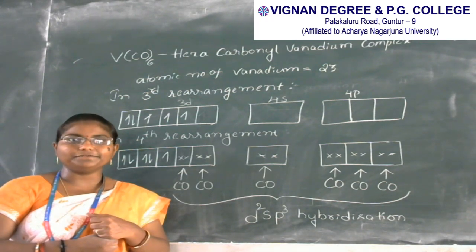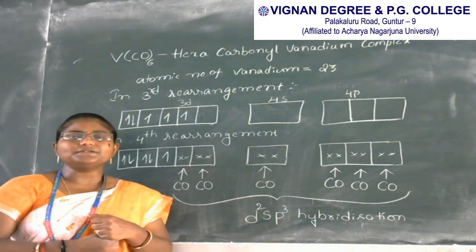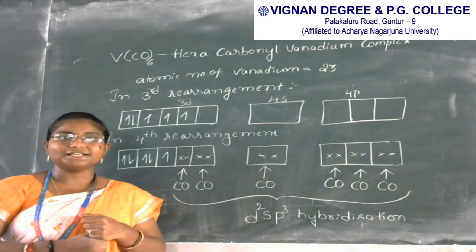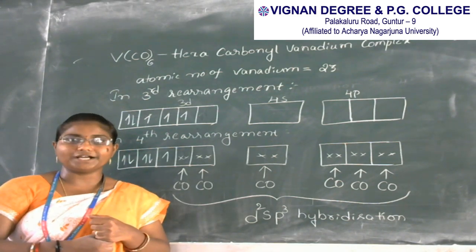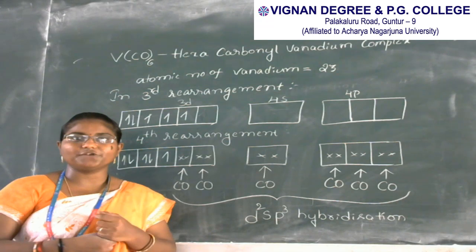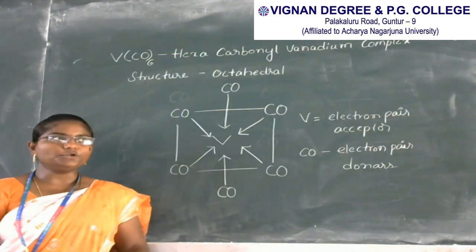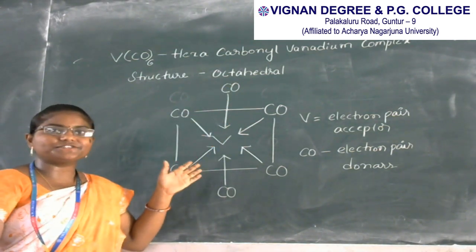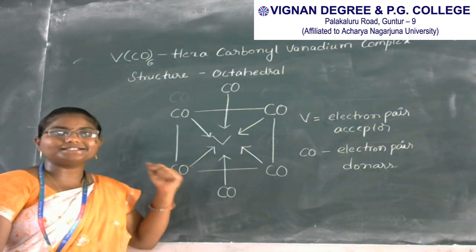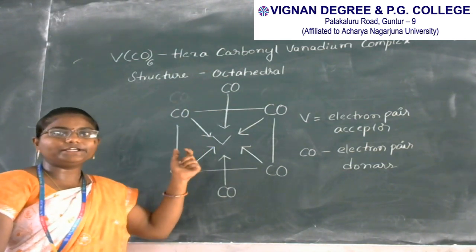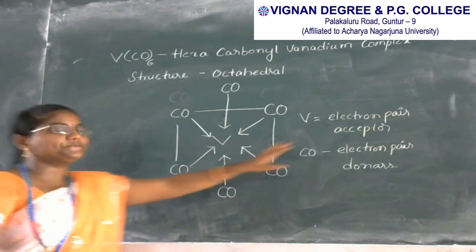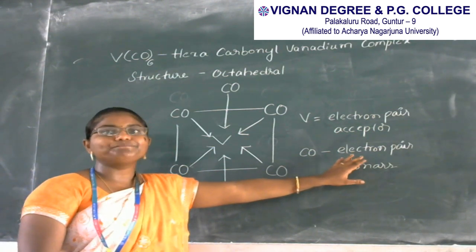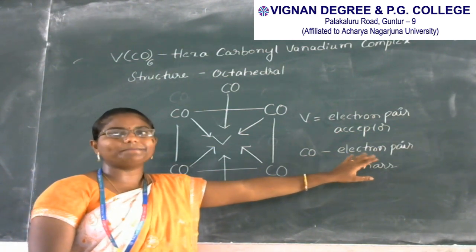According to the electronic configuration rearrangements, the structure of hexacarbonyl vanadium complex is octahedral. The 6 carbonyls in the complex occupy the 6 corners of the octahedron. In this complex, vanadium acts as an electron pair acceptor and CO ligands act as electron pair donors.